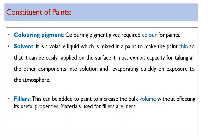Next is coloring pigment. As the name suggests, coloring pigment gives the required color or shade for paints. Whatever shade is required depends upon the coloring pigment.